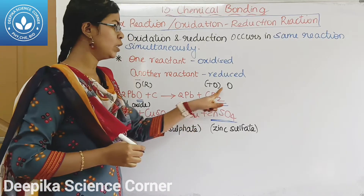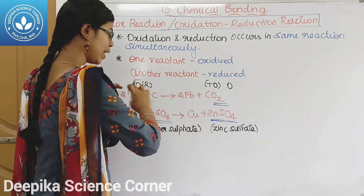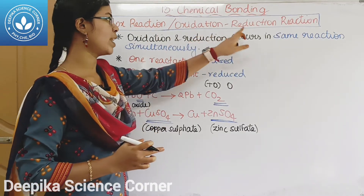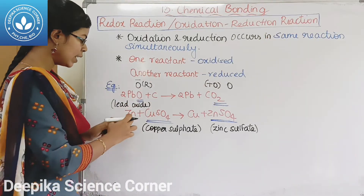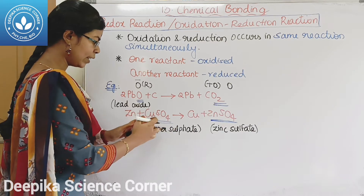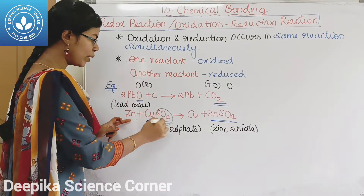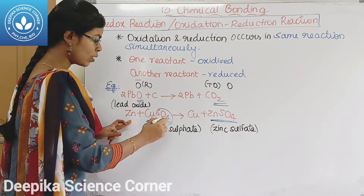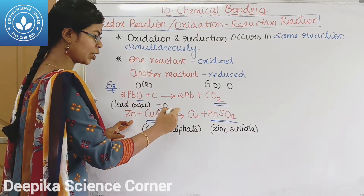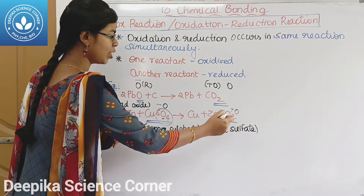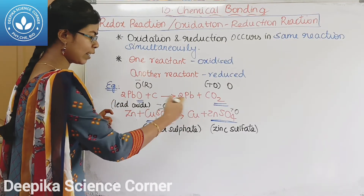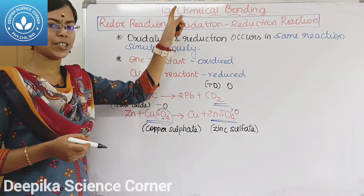Both reactions — oxidation and reduction — occur simultaneously, so we say it is a redox reaction, otherwise called an oxidation-reduction reaction. Next example: Zn + CuSO4 gives ZnSO4 + Cu. This is a redox reaction — an oxidation-reduction reaction.